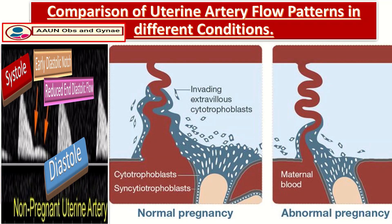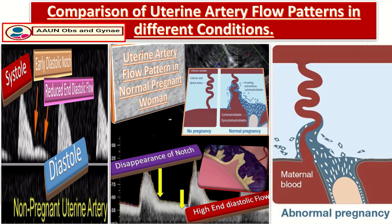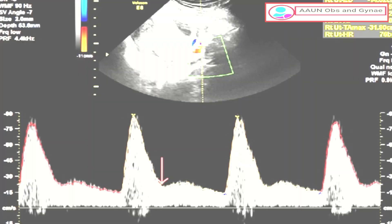During normal pregnancy, due to remodeling of the spiral arteries, the notch disappears and end-diastolic flow markedly increases. In placental diseases such as pre-eclampsia and fetal growth restriction, the uterine artery flow pattern is somewhere in between the non-gravid uterus and the healthy pregnancy waveform.